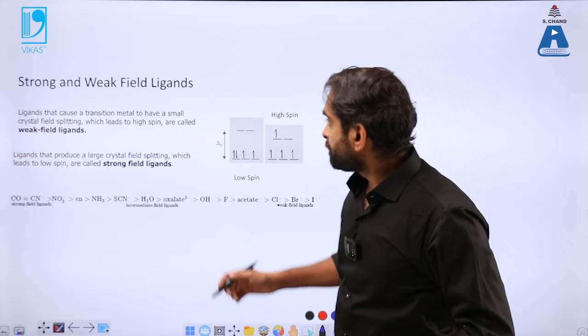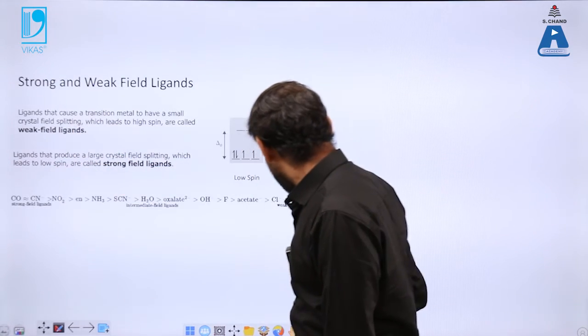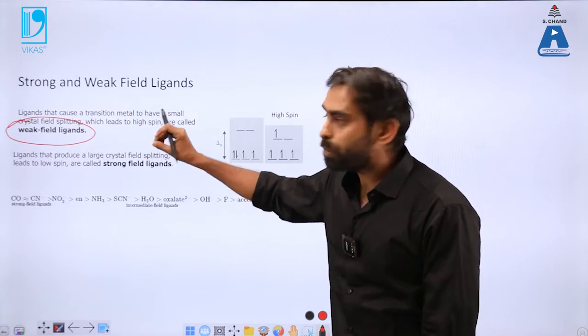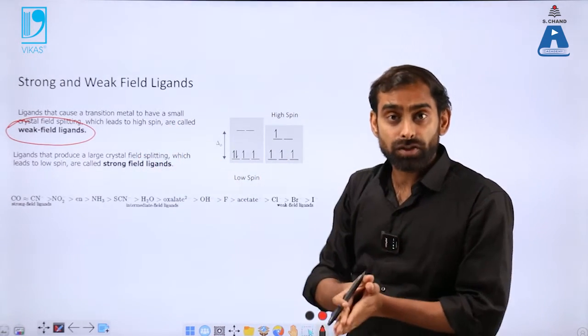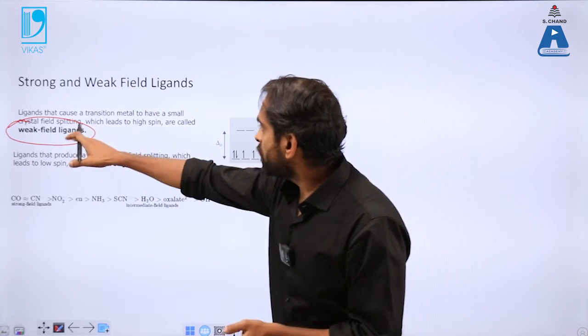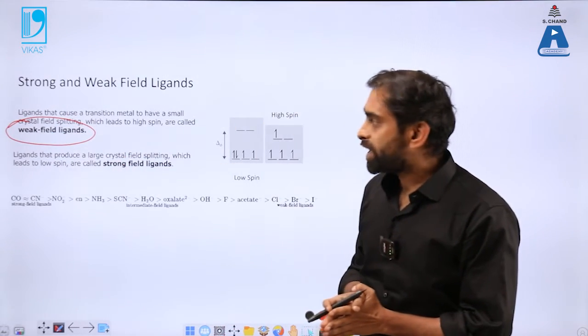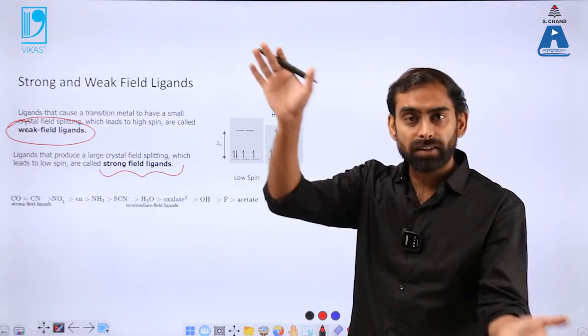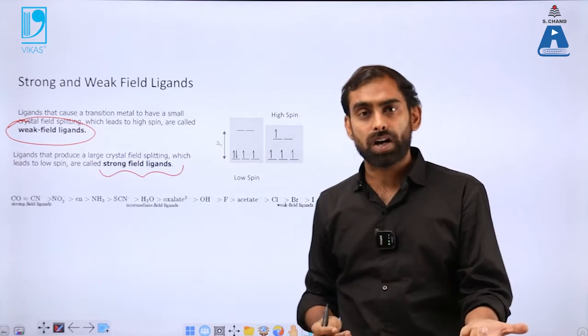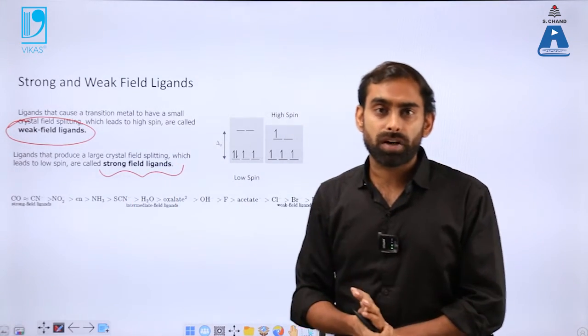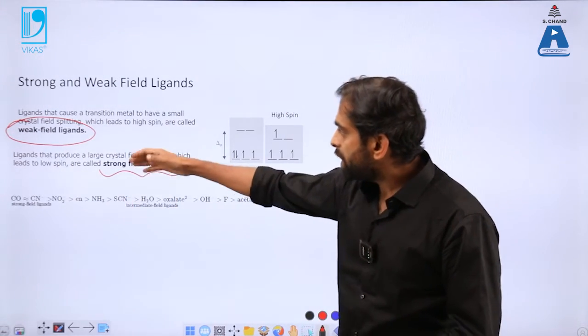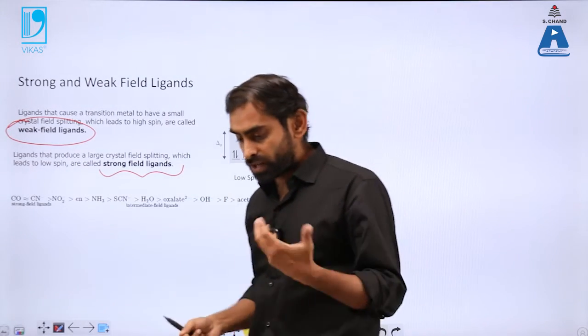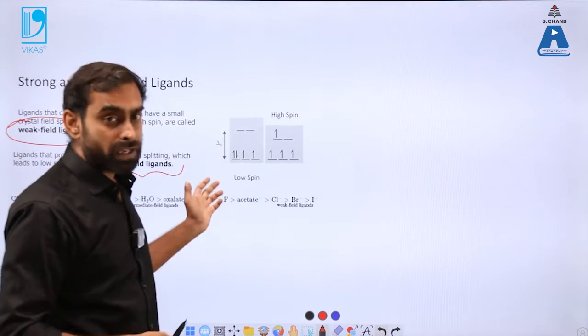And on that criteria, we can call those as weak field ligands and strong field ligands. So ligands that can cause a transition metal to have a small crystal field splitting, when the splitting is not very powerful, those ligands are called as weak field ligands. And those ligands which can cause a strong field splitting, they are called as strong field ligands. So more the amount of charge, larger the coordination number, all these things will make a particular ligand stronger. And smaller charge or a smaller coordination number that will make a ligand weaker.